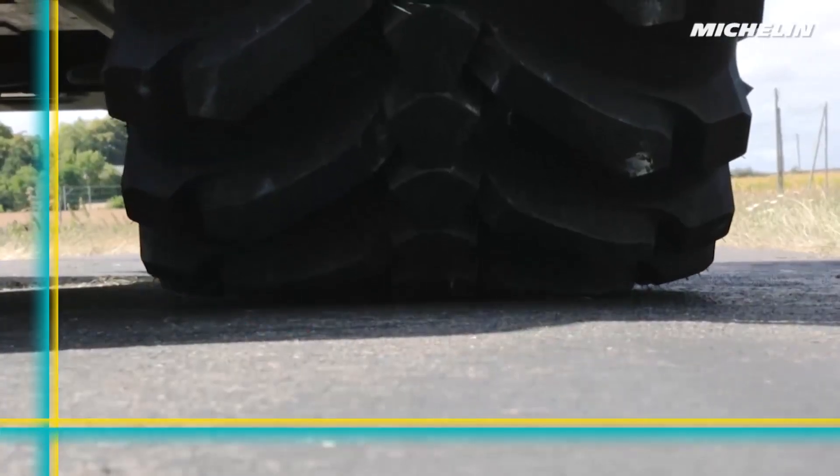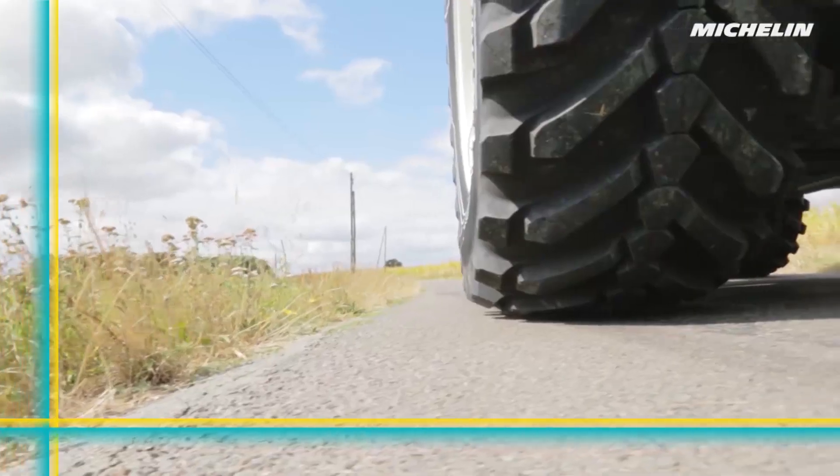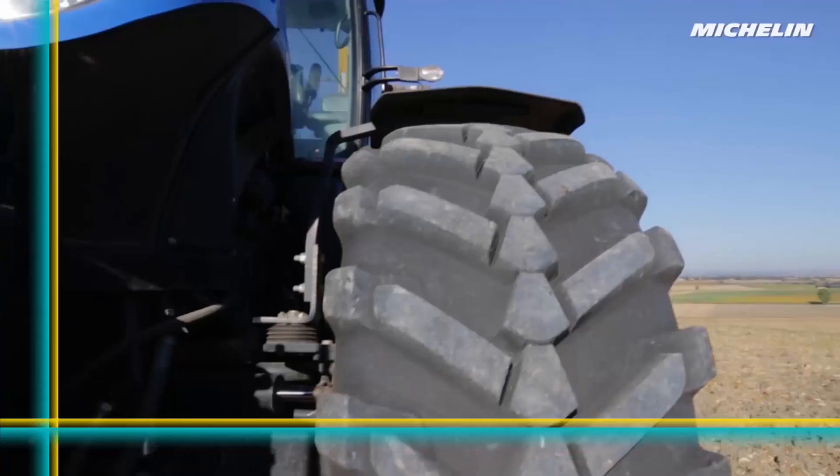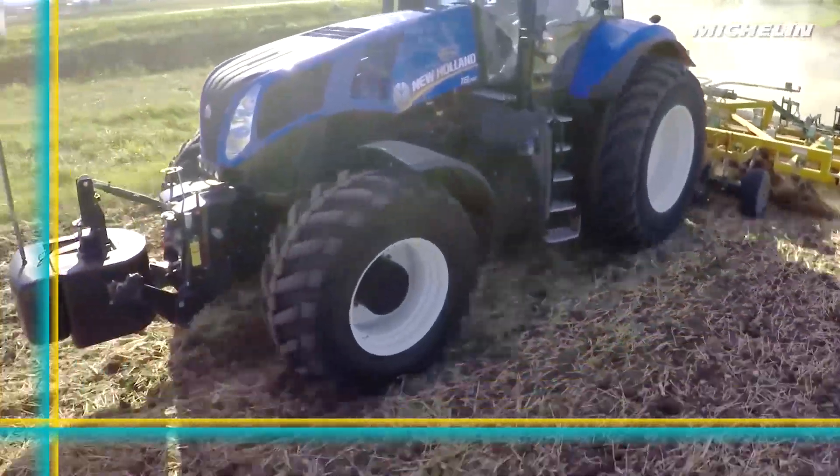The Evobub is designed to maximize traction and performance at different internal pressures. It can be aired up to a high pressure for high-speed road travel and then deflated to a lower pressure to maximize traction in the field.